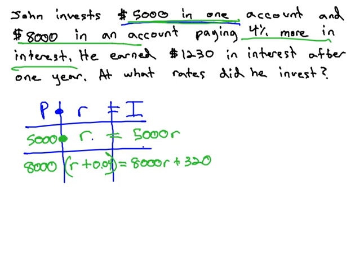We're also given a total. The total amount he has earned is $1,230 in interest, so we'll make that 1,230 our total in the interest column.